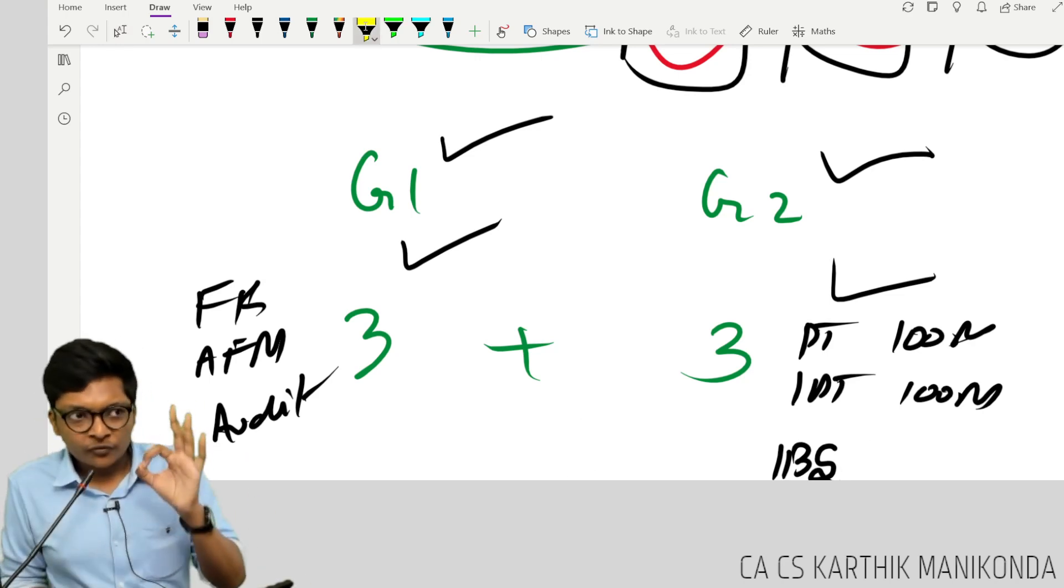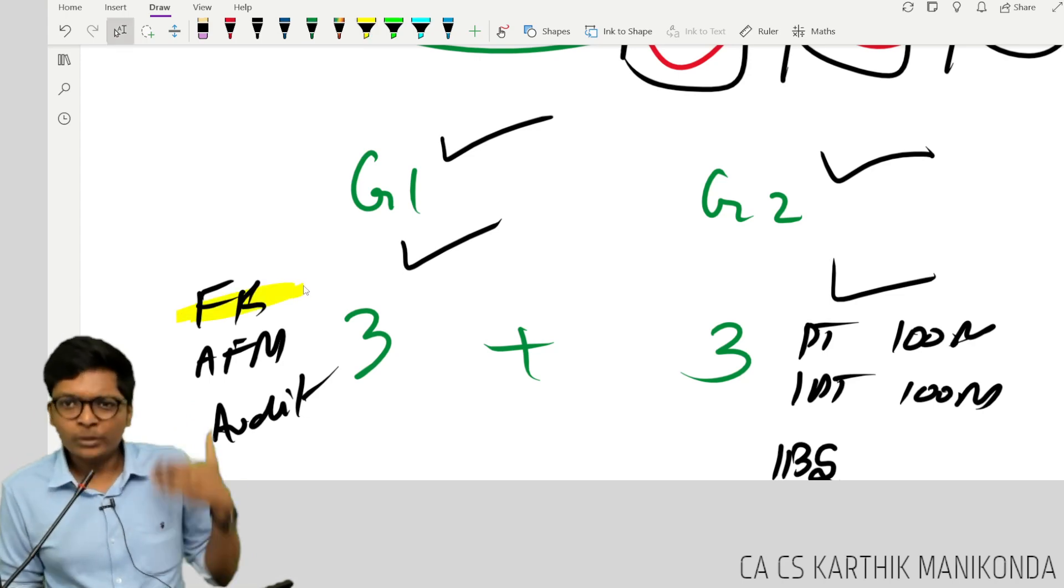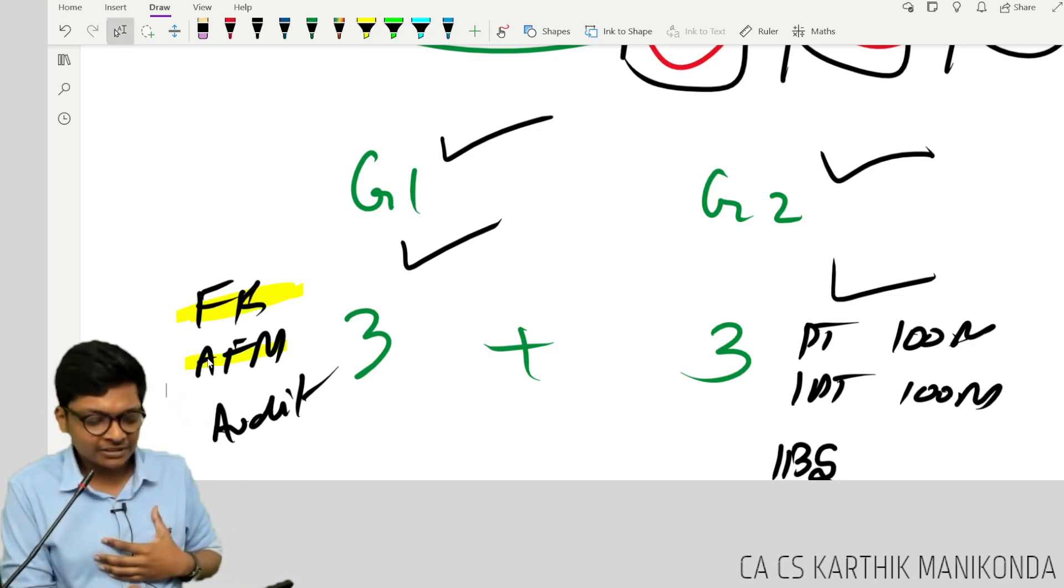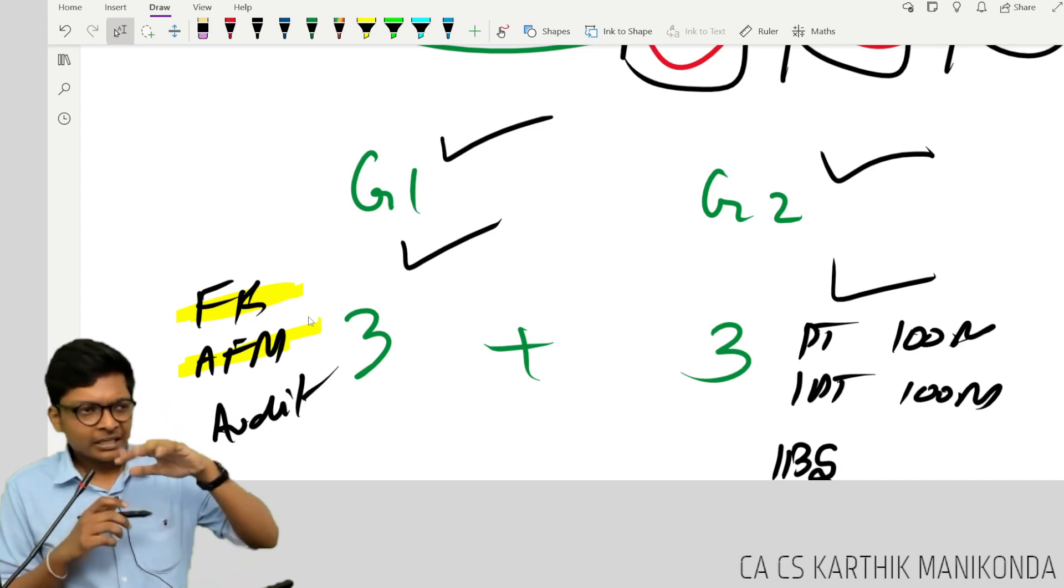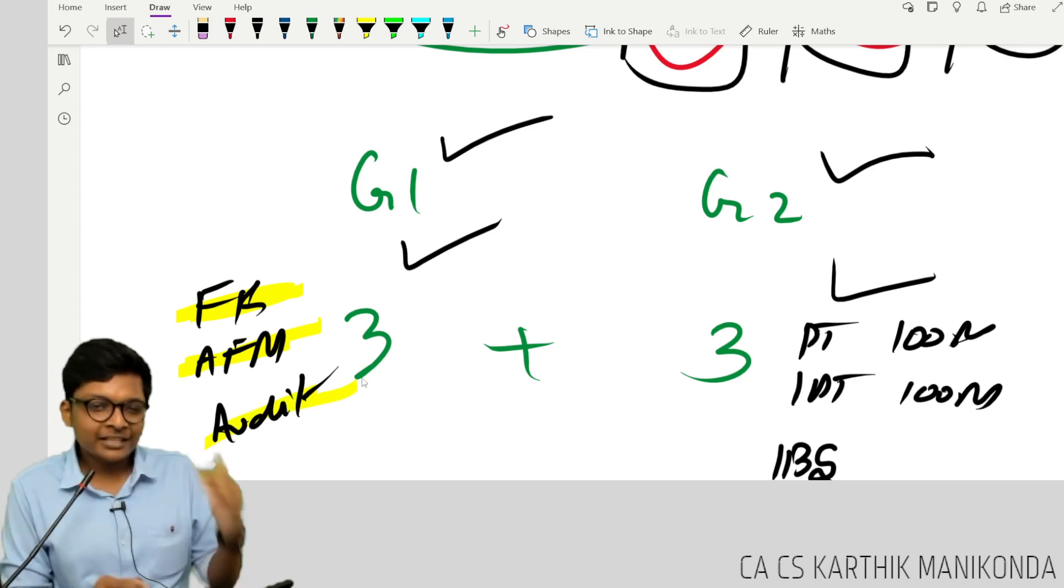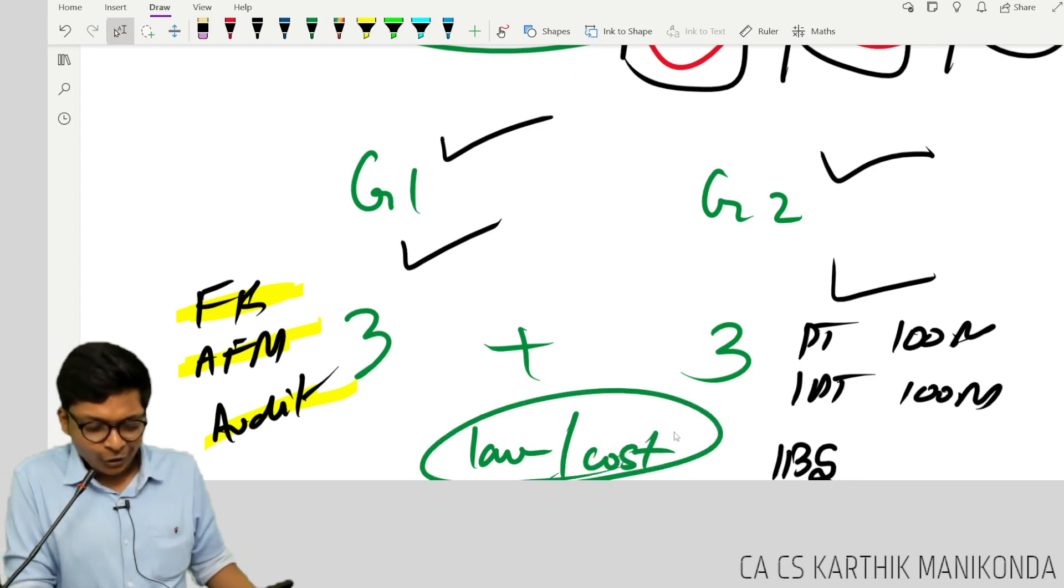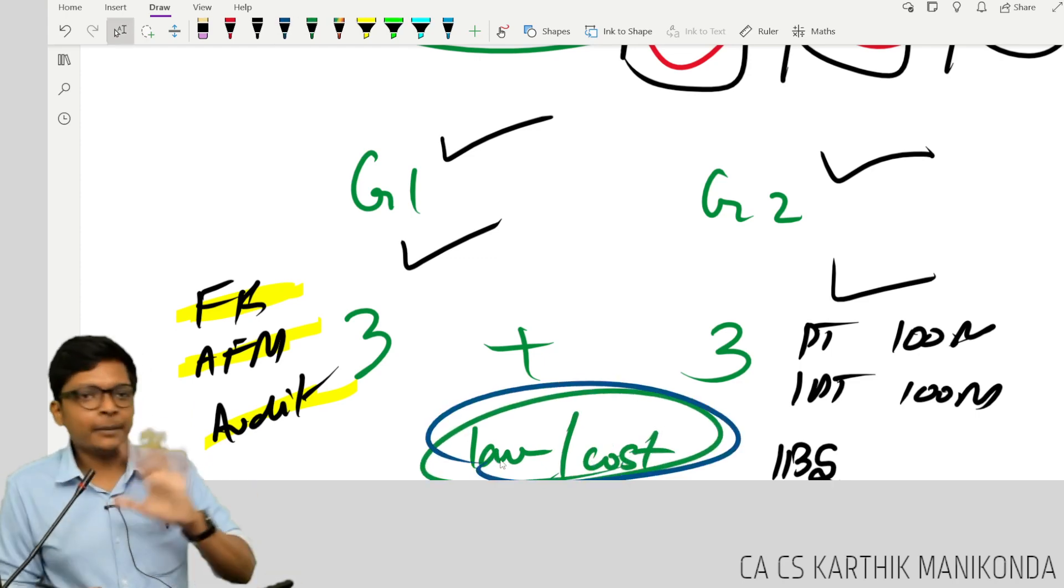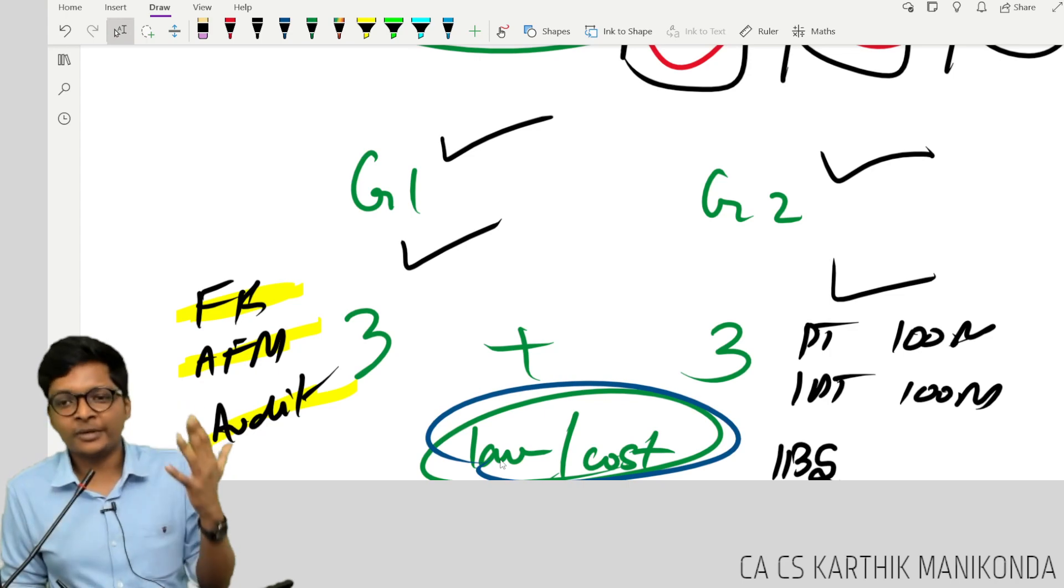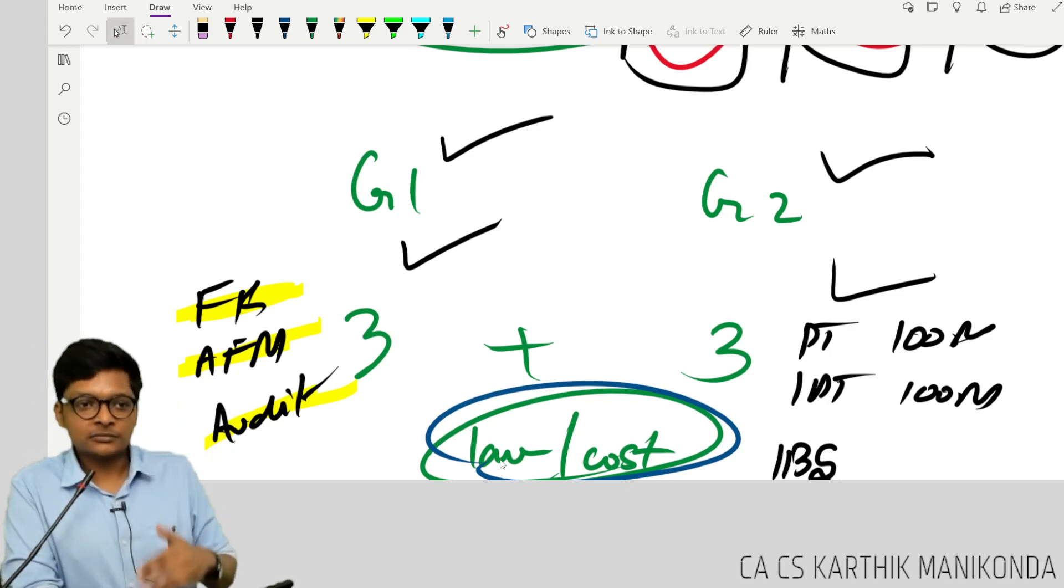You cannot write group 2 first in final. Why? FR is basically accounts guys, what we are studying now, India AS, complicated sums. AFM is FM, completely different, derivatives accounting, portfolio management, valuation all of that, investment banking all of that kind of work. Auditing is same as auditing. Law and costing is not an exam anymore, law and costing is removed, I am sure everybody knows. It becomes a self-paced module, you have to write in the house, MCQ write in the house.